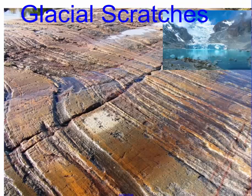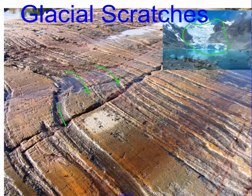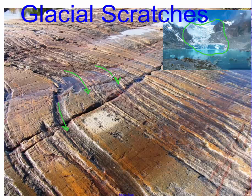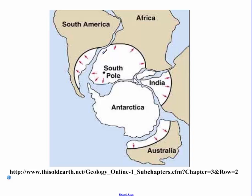He also noticed matching glacial scratches. A glacier is a large mass of ice — the size of a city — that slides slowly and scratches the rocks underneath it. Here you can see these large glacial scratches, and what they found is that the scratches on South America, Africa, and India would line up exactly, much like how on CSI shows they match scratches on a bullet to a gun under a microscope. This was more evidence pointing to the continents once being together.